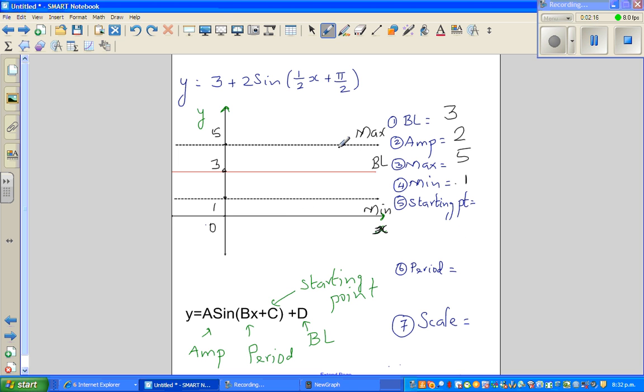Now we need to decide the starting point. To decide the starting point, we need to set this whole thing equal to zero. Let me first change this into degrees. Pi by 2 radians is 90 degrees. So I'll write this in terms of degrees: 3 plus 2 sine of half x plus 90. To decide the starting point, you have to set this whole thing equal to zero.